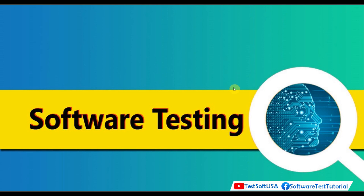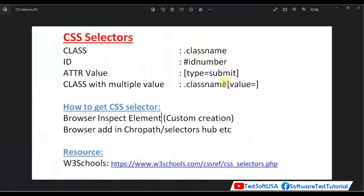Cypress uses only CSS selectors for element locating. So how do you write a CSS selector for any element? If you figure out the class name of that element, put a dot sign before the class name — that is the CSS selector. If you figure out an ID of any element, put a hash sign before the ID — that is the CSS selector for that element.